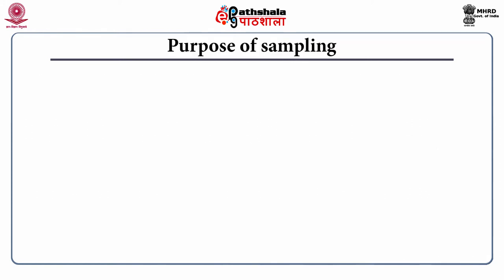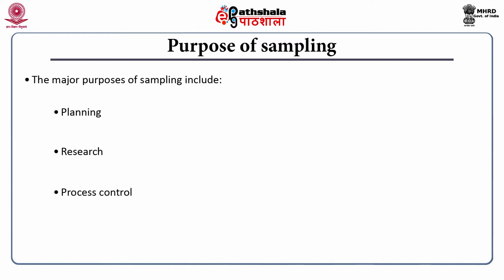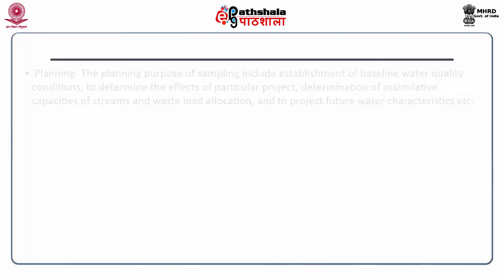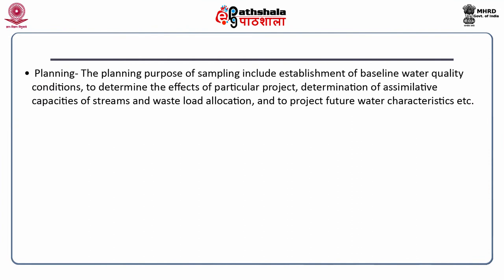What is the purpose of sampling? There are four major purposes of water sampling: planning, sampling for research, sampling for process control, and sampling for regulations. The planning purpose includes establishment of baseline water quality conditions, determination of assimilative capacity of streams and waste load allocation, and to project future water characteristics.